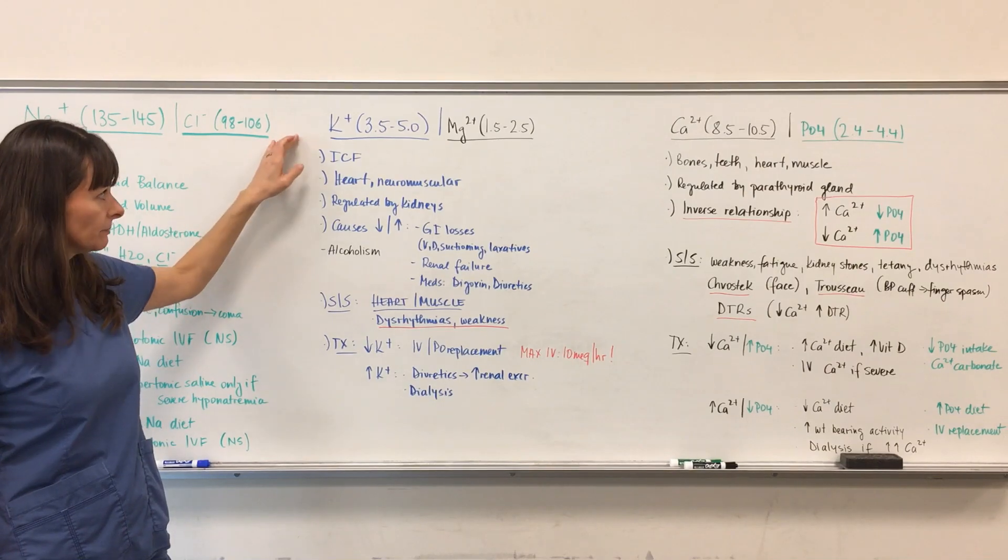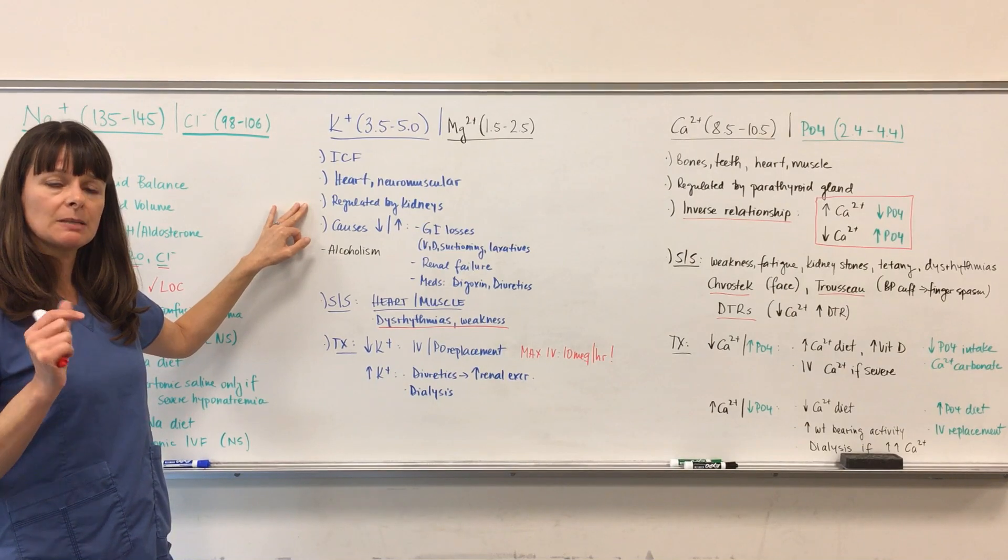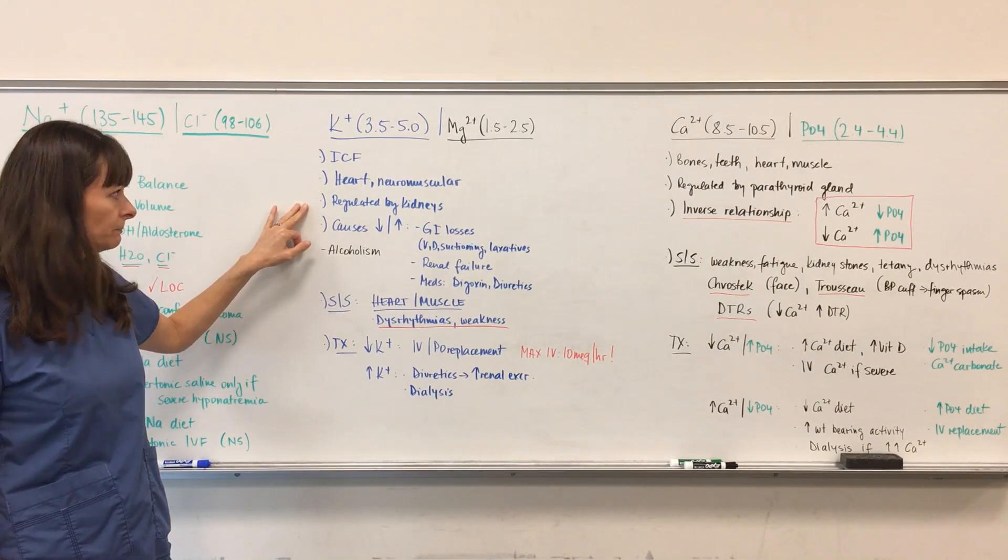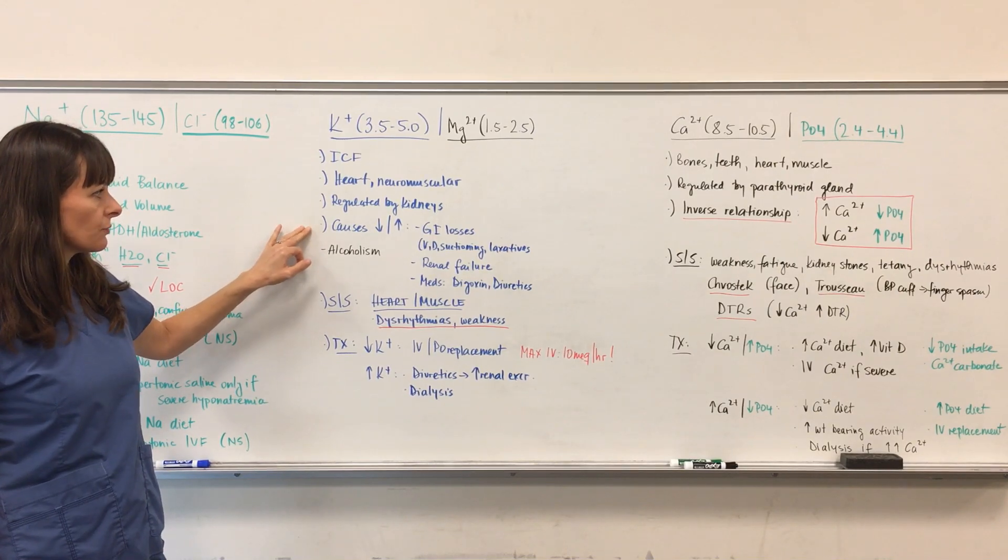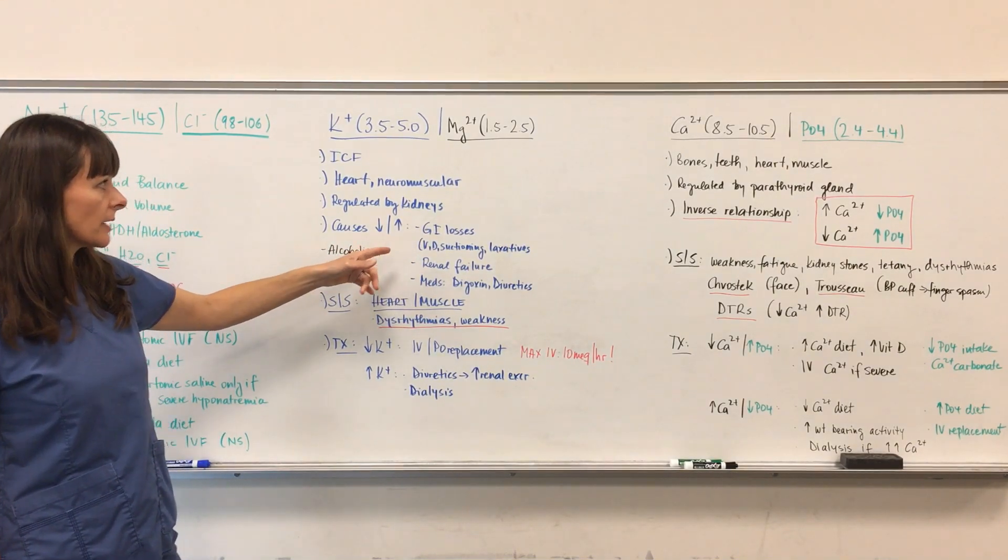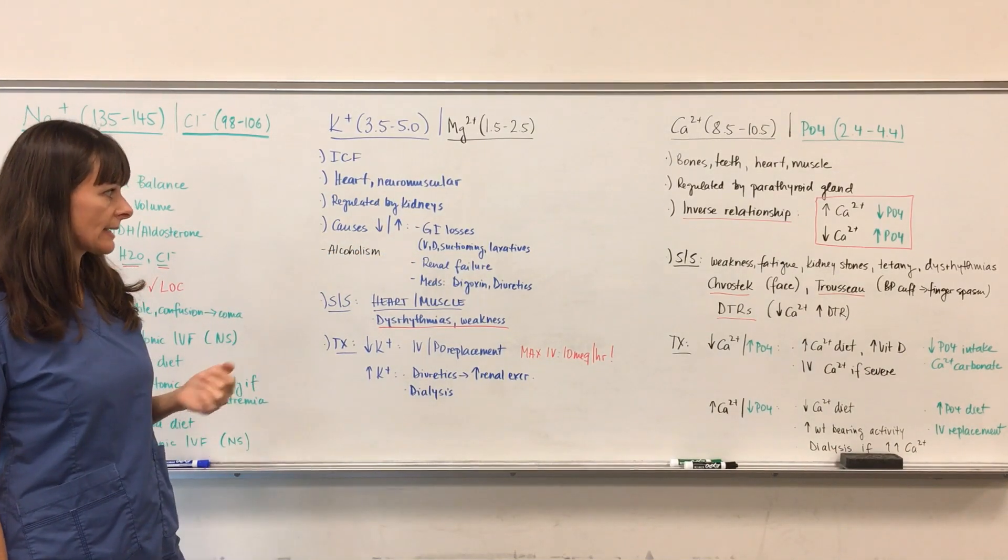Potassium is regulated by the kidneys. The kidneys exchange sodium and potassium depending on the pH, the levels, and the needs of the body. Causes for high or low potassium can be GI losses such as vomiting, diarrhea, suctioning, or laxatives.